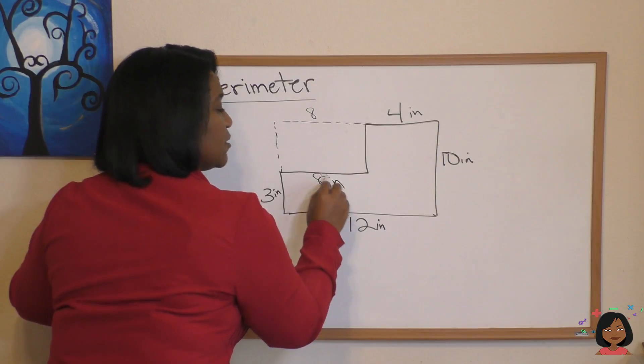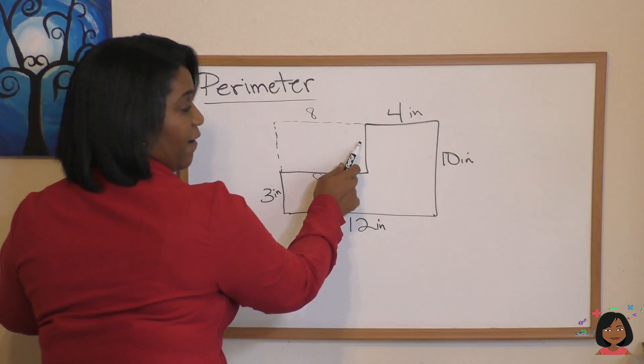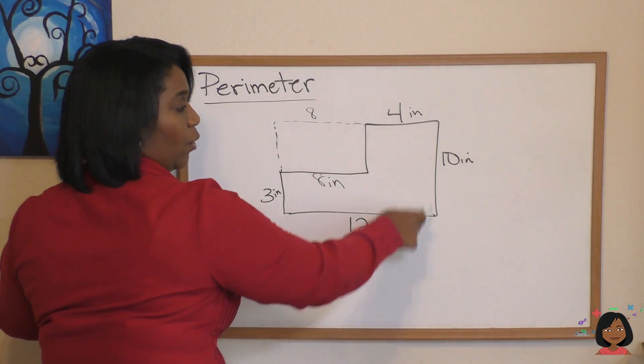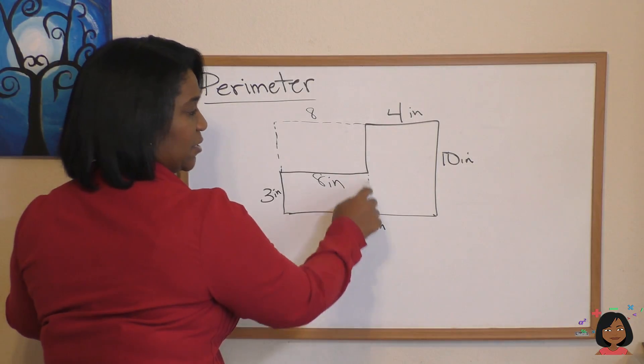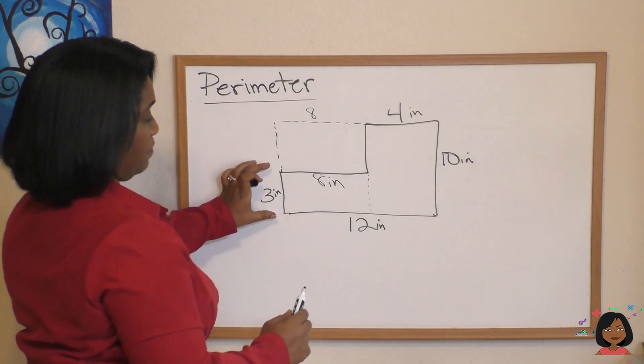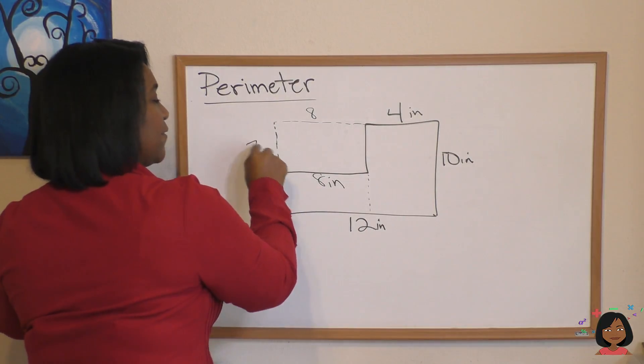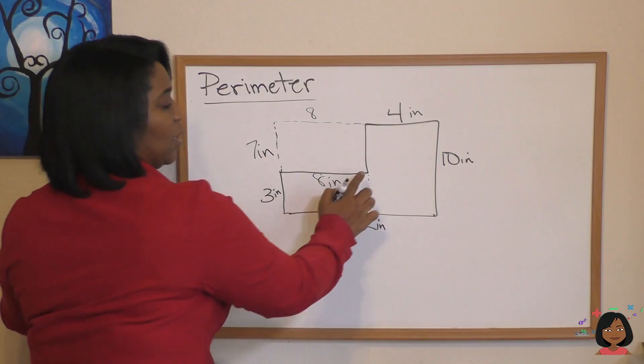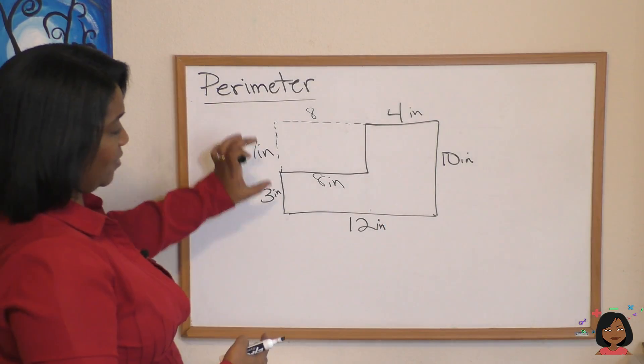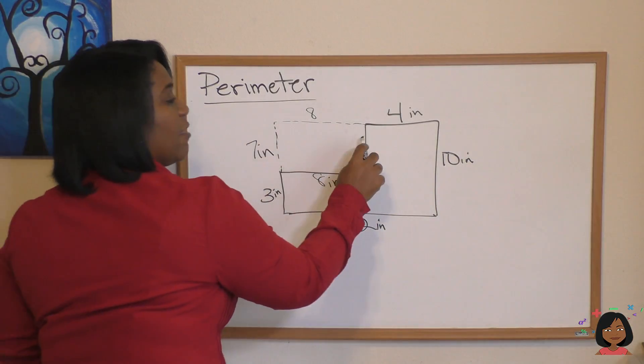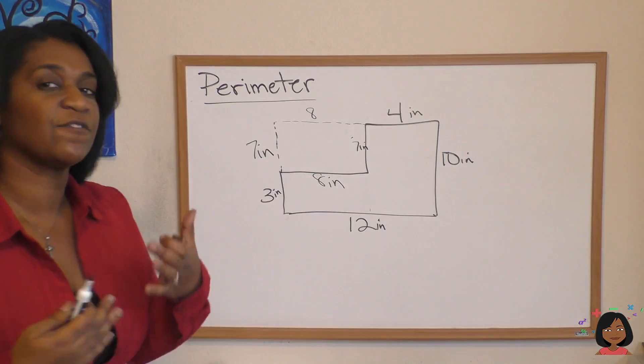Well, this is a rectangle. If this is 8, we know that the piece on the bottom must also be 8 inches. We can do the same thing with this side. We need to find this side. We know the whole side is 10 and we know that this piece, which is the same as this piece here, is 3. So this whole side is 10, this must be 7 inches. This side must be 7 inches. 7 and 3 is 10. So this side is 7, this side must also be 7.